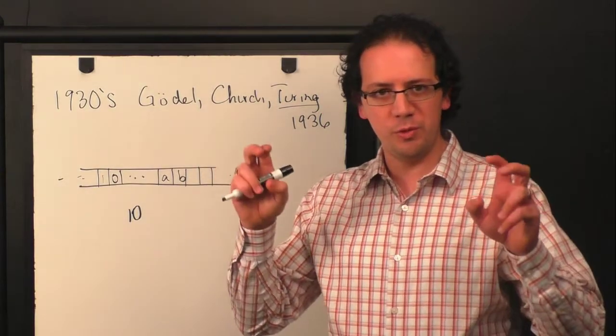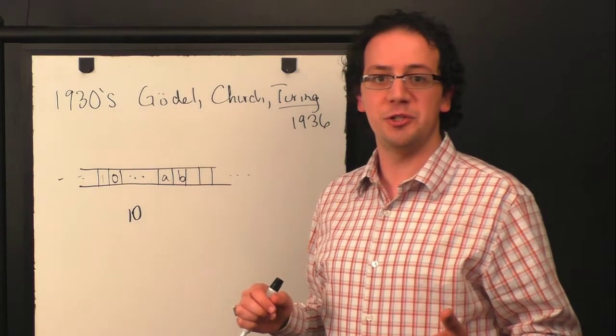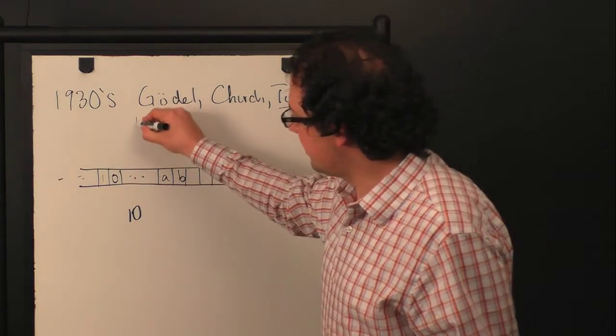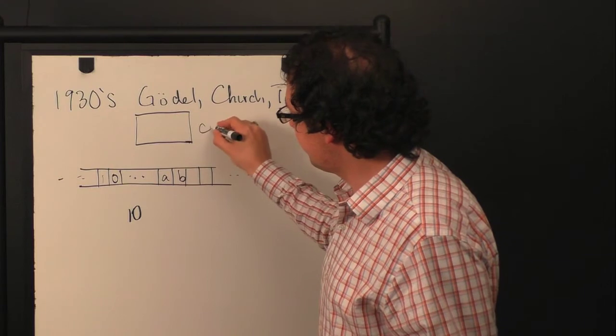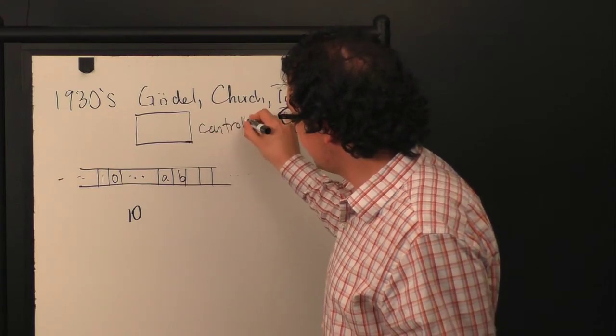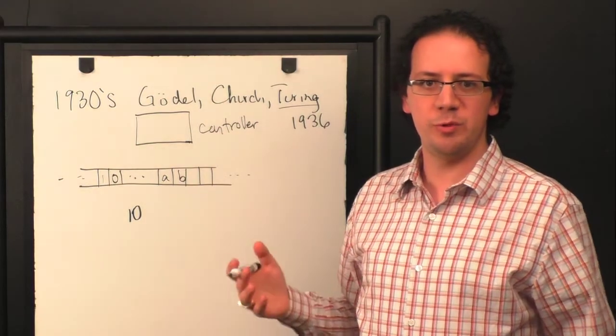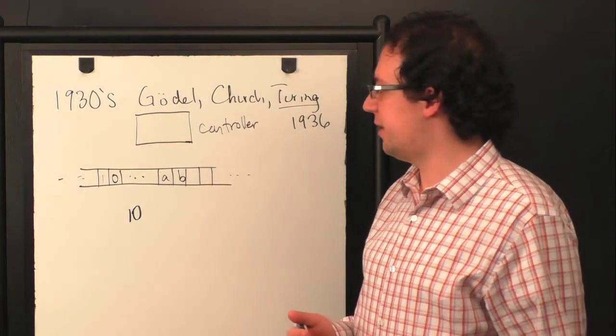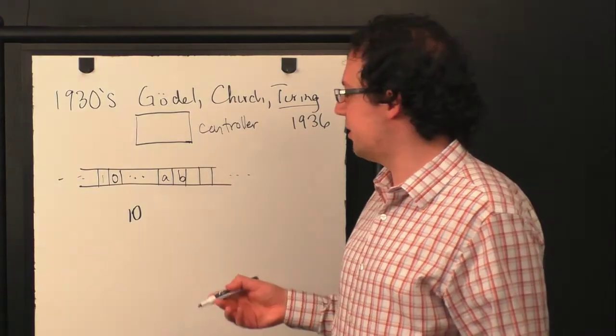And you, the computer in this case, has a finite list of instructions that you're going to follow. And the way he modeled this is there's the controller, which itself has finitely many states that it can be in, where those states roughly correspond to the list of instructions that you're going to follow. And what do the states do? The states tell it what to do next. So what does it do?